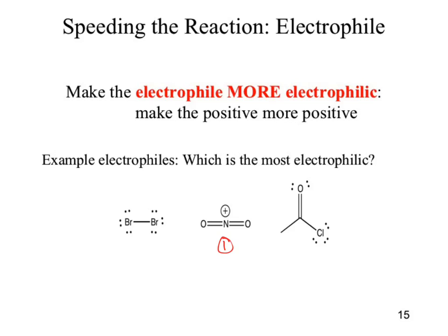How about between the next two? We have a weak polar pi bond which could do resonance, generating a partial positive charge through a resonance contributor — that's probably the next. Bromine is probably the least electrophilic. So what we're addressing is how we can make the electrophile more electrophilic. We'd need a leaving group to leave — in the case of bromine, one of those bromines must take the electrons. Is that going to happen quickly and easily? No.